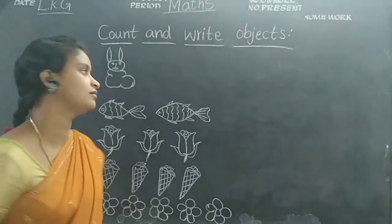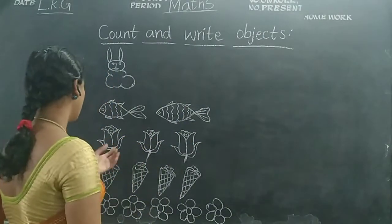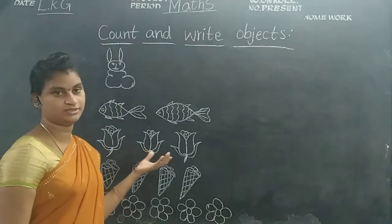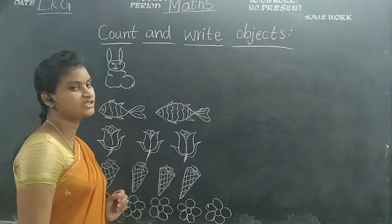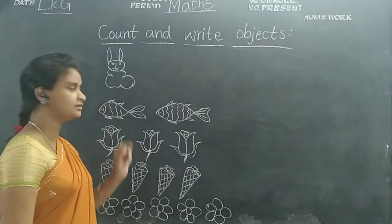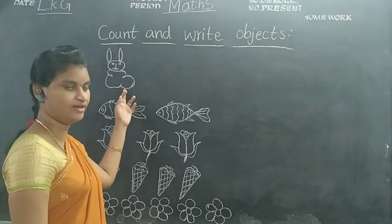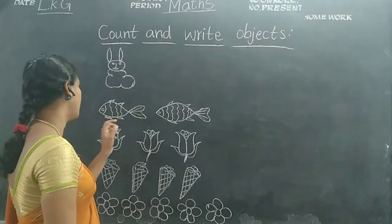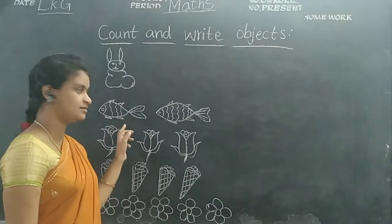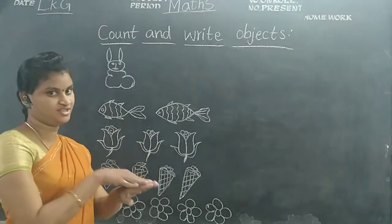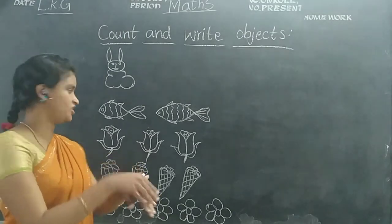Okay children. Count and write object. I draw some pictures, children. Look at the board children. What is this picture children? This is a rabbit. What are these children? These are fishes.